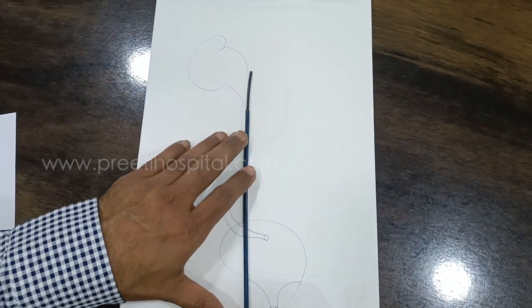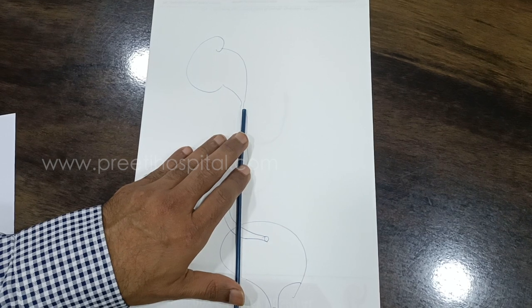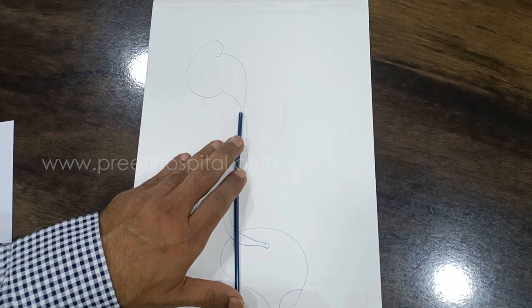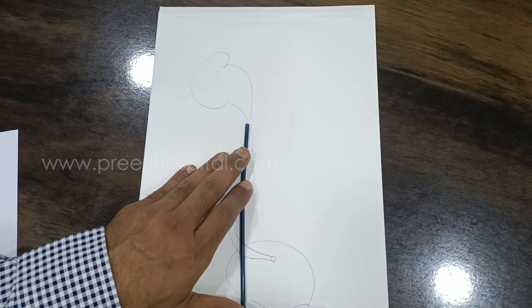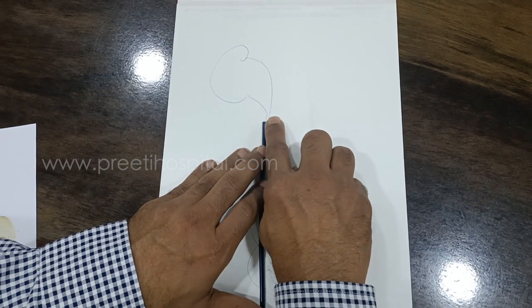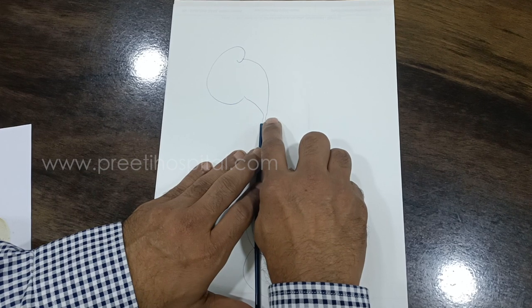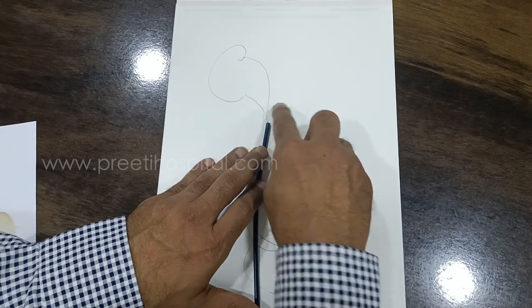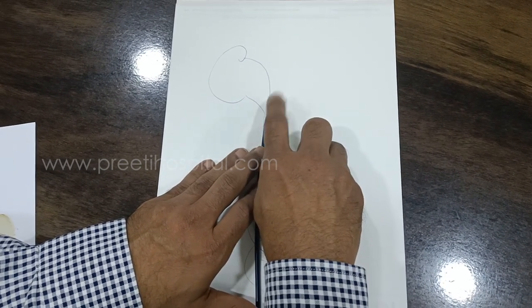Somewhere between the sacroiliac joint to transverse process. By chance, if you put access sheet very high, when you remove this flexible scope and if somebody moves this assistant or you move inadvertently, this area is very thin and curved. If it damages, it causes stricture and that stricture is difficult to repair.